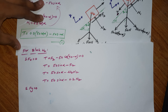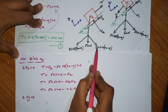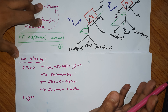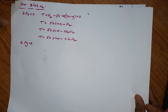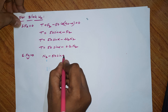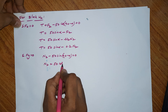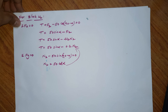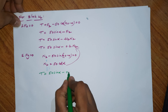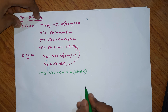Applying Sigma Fy = 0 for W2 block: N2 upward minus 50 sin(90 minus alpha) = 0. Therefore N2 = 50 cos(alpha). Substituting N2: T = 50 sin(alpha) minus 0.2 × 50 cos(alpha). This is Equation 2 from the W2 block equilibrium analysis.